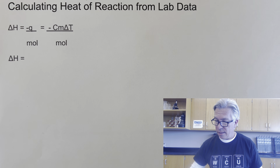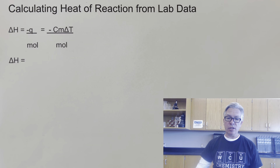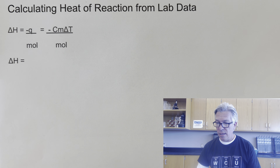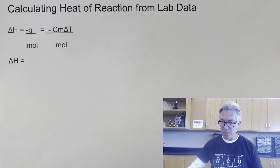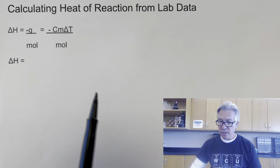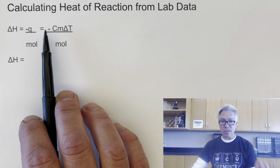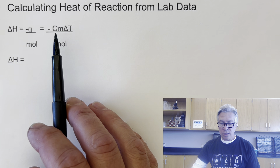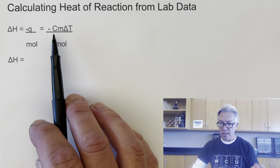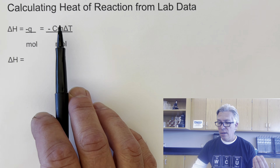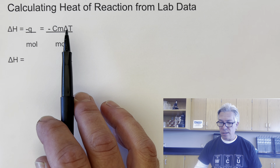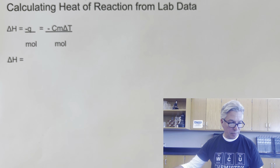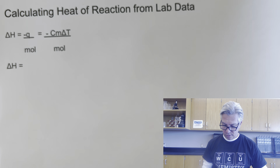To calculate delta H from lab data, you need to figure out how much heat was absorbed or released and then divide by the number of moles, because delta H is in kilojoules per mole. So we find Q, which equals C times m times delta T, because we have a solution and we're monitoring its temperature change. We take the heat capacity, the mass, and the temperature change to get the total joules — which we convert to kilojoules — then divide by the number of moles of reactant.